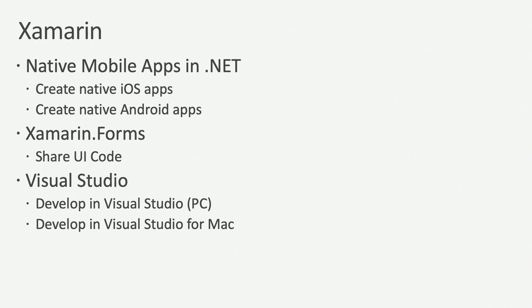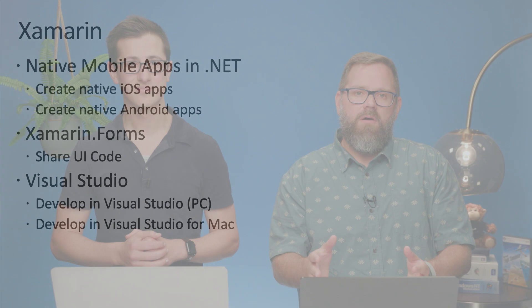So let's take a quick review of what Xamarin is. Xamarin is Microsoft's mobile technology for creating iOS, Android, and UWP apps. And with Xamarin Forms, we can share even more code between those platforms by only having to write the UI once. And you do this using Visual Studio, whether you're on the PC or on the Mac. Thanks so much for joining us. Stay tuned for our next video, where we teach you how to install Xamarin.